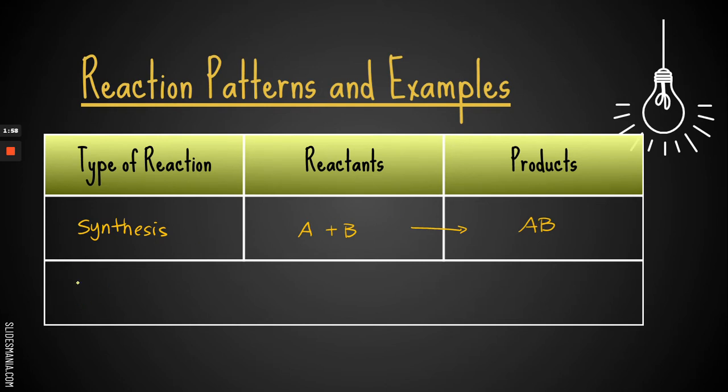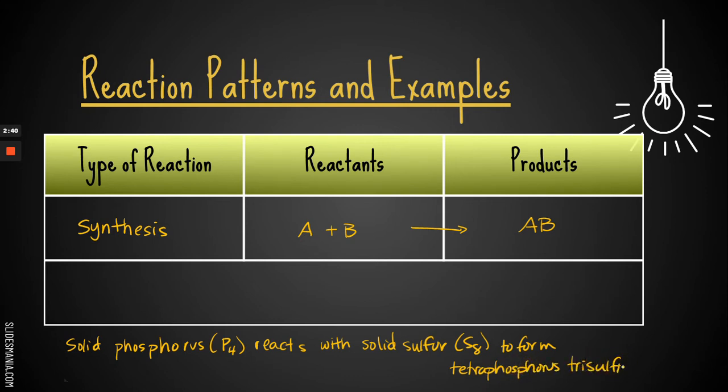Now we need an actual example. So for our actual example, I'm going to give you a word equation so we can practice that. So if we have solid phosphorus, which has the formula P4, it's actually not just plain old P, but you wouldn't know that, so it's okay to just give you that. It's going to react with solid sulfur, which is actually S8, and it's going to form tetraphosphorus trisulfide.